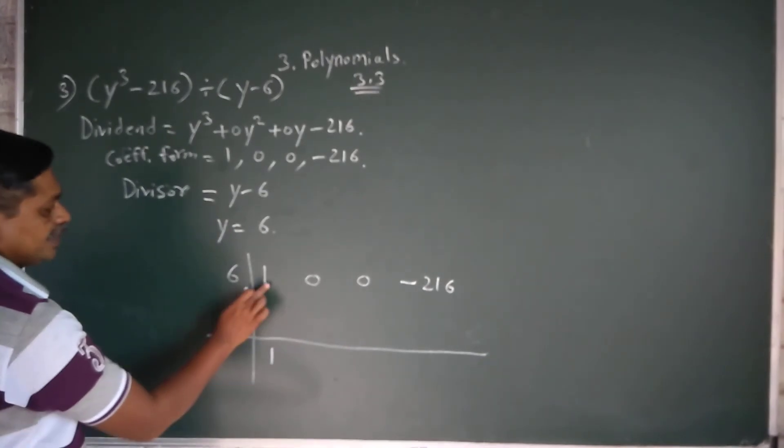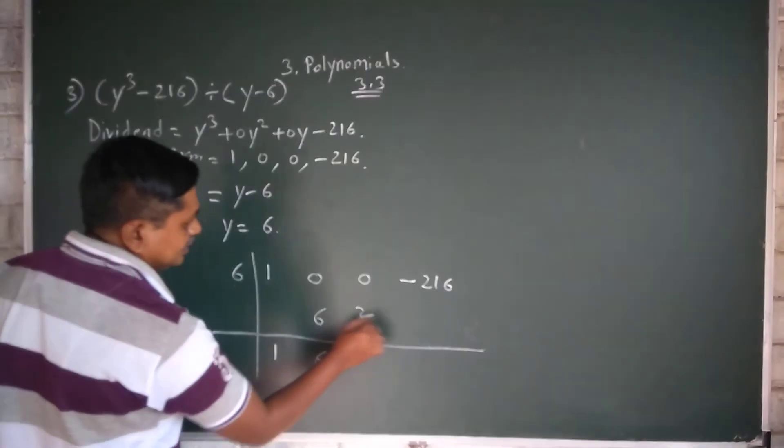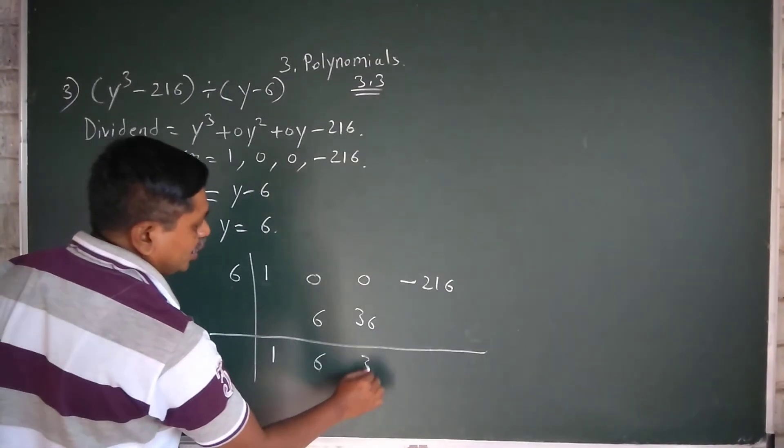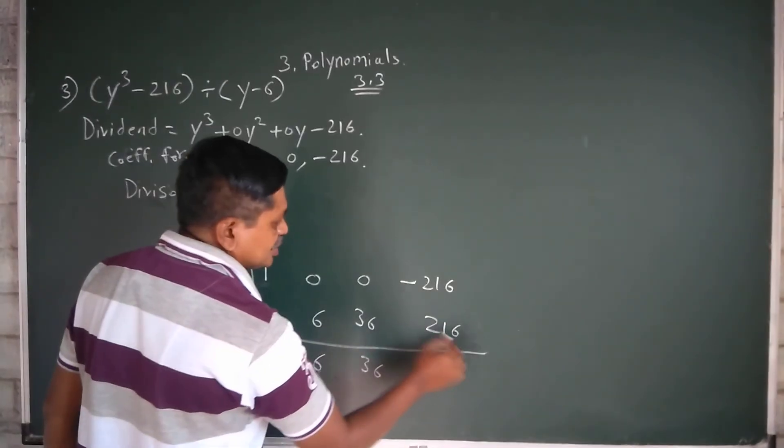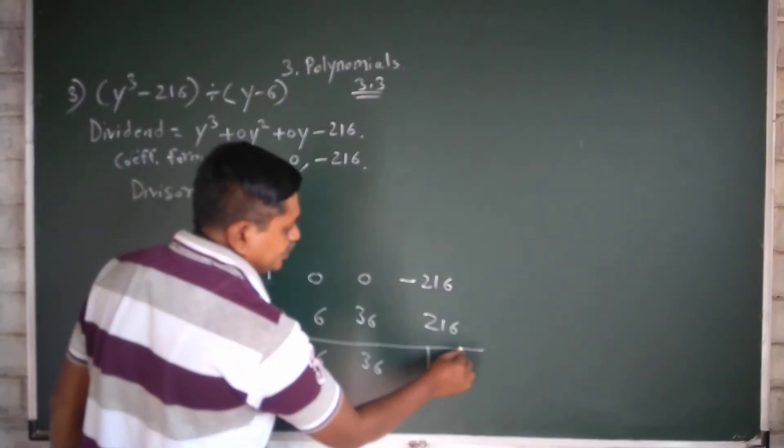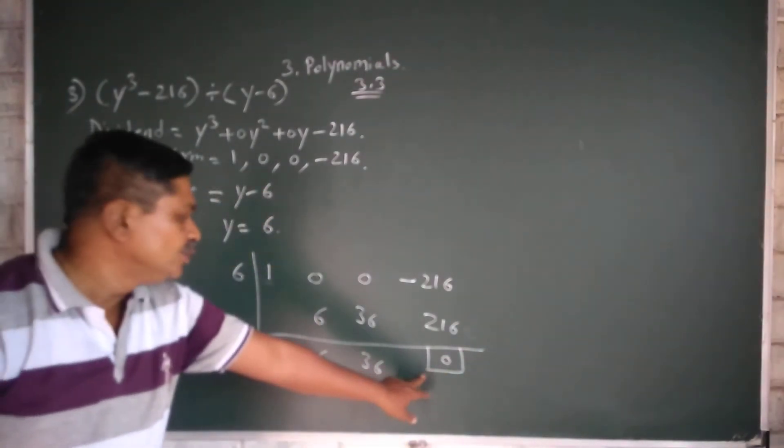1 as usual came down. 6 times 1 is 6, 0 plus 6 is 6. 6 times 6 is 36, 36 plus 0 is 36. 36 times 6 is 216, plus minus: -216 + 216 is 0. Remainder is 0.